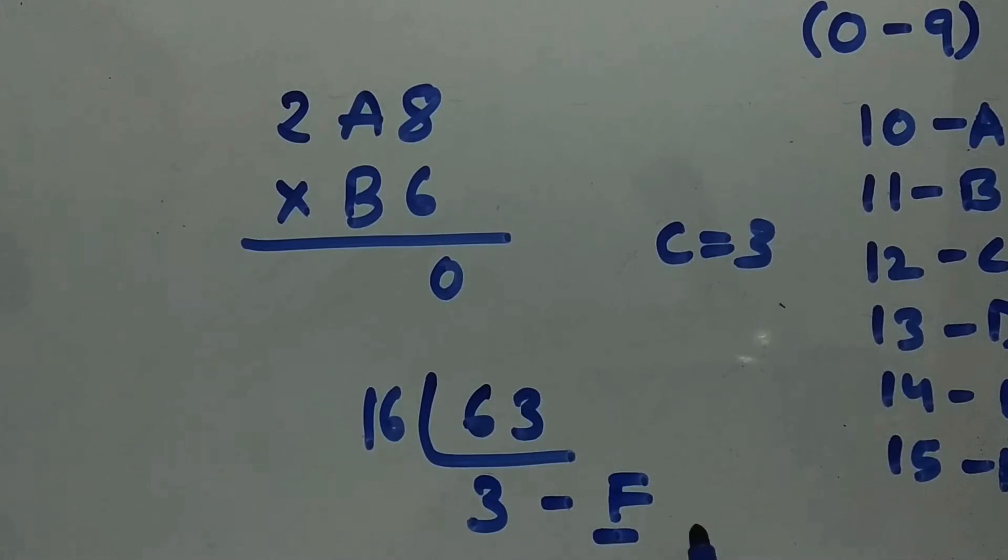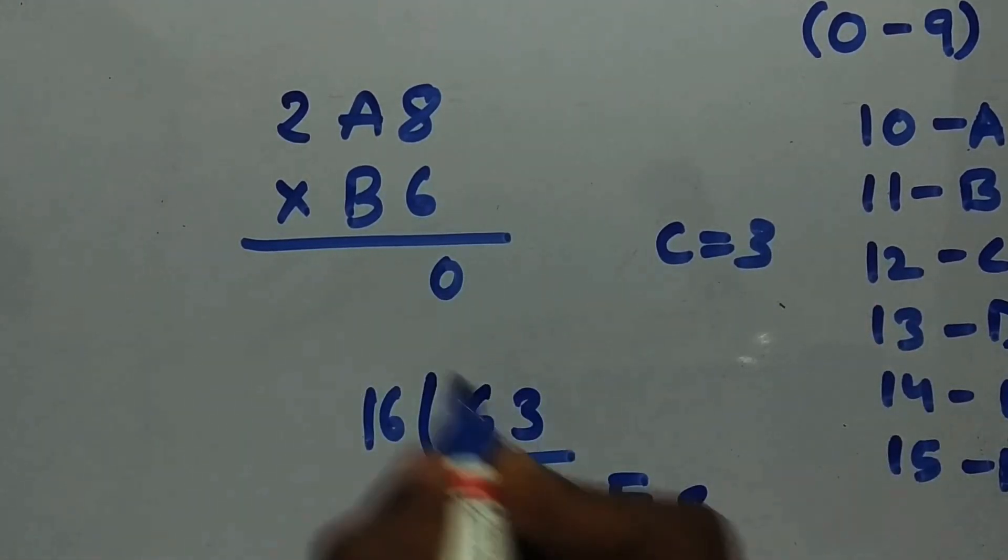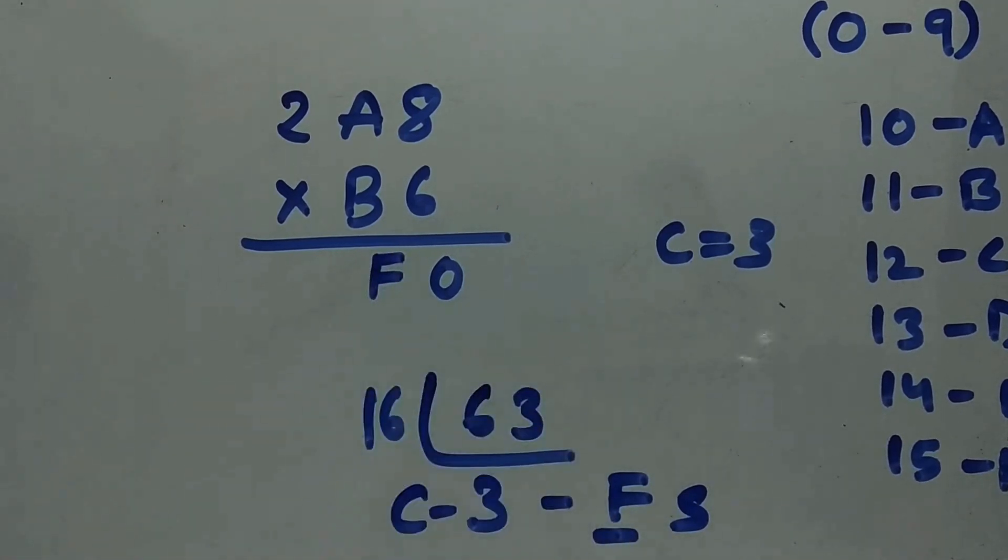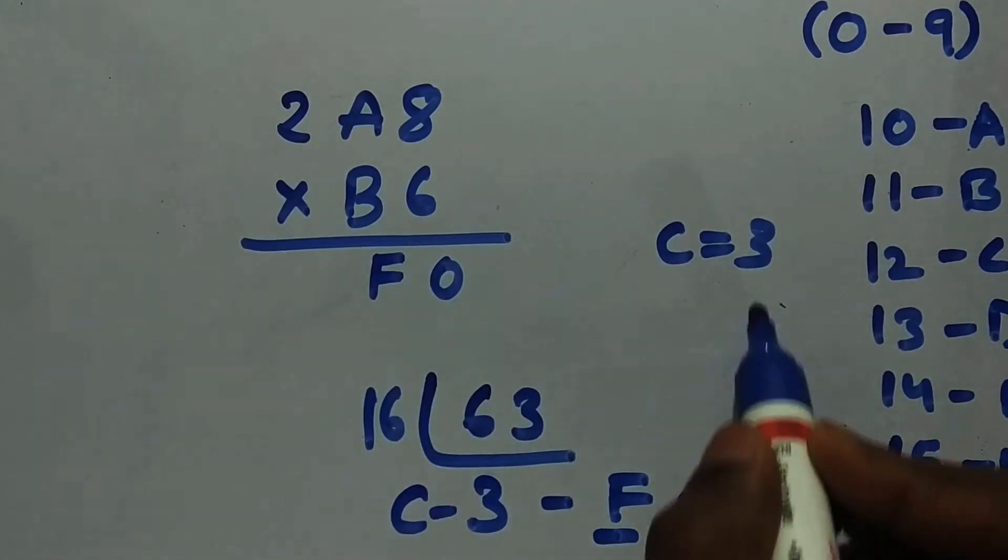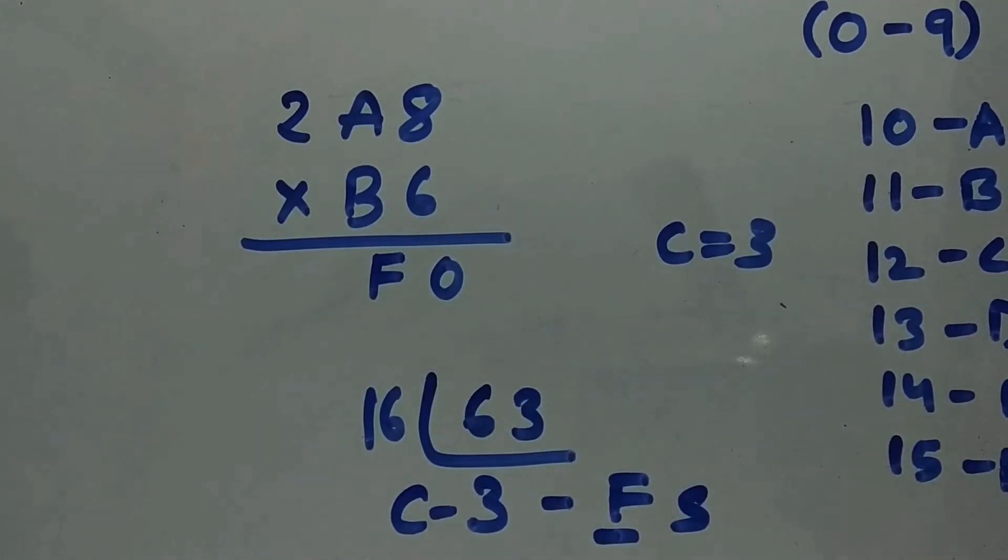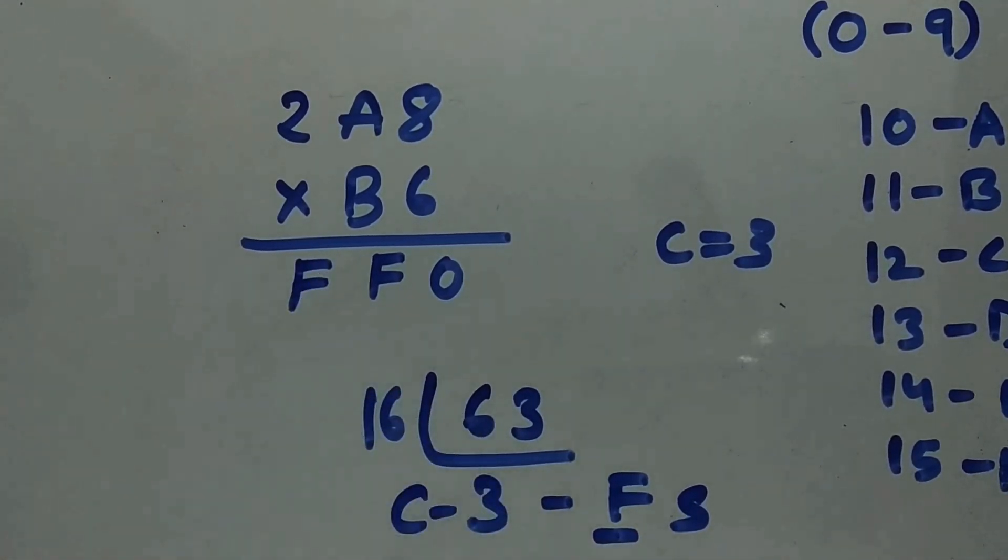Carry remains the same so write F over here. Now we got 6 into 2, it's 12. 12 plus 3 is 15, so 15, we got F over here, no need to convert. So FF0 is our first answer.